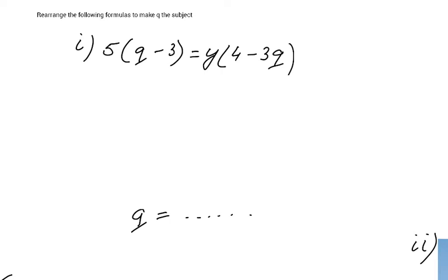Now let's have a go. And again there are more ways of doing this, but I always prefer to expand. 5Q minus 15, don't forget that second term, you have to multiply by 5, equals 4Y minus 3YQ.